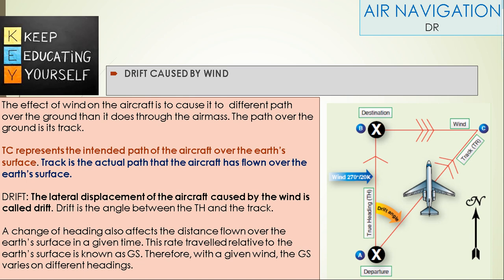The effect of wind on the aircraft is to cause it to take a different path over the ground than it does through the air mass. The path over the ground is its track. True course represents the intended path of the aircraft over the earth's surface. Track is the actual path the aircraft has flown over the earth's surface.